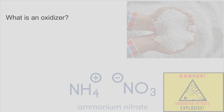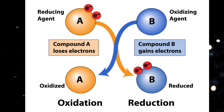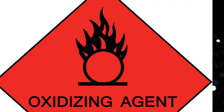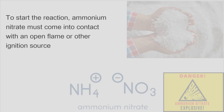What is an oxidizer? The compound is considered an oxidizer, meaning at an atomic level, it removes electrons from other substances in a chemical reaction. In a more practical sense, it increases the burning of fuels by increasing the oxygen that's available to those fuels. To start the reaction, ammonium nitrate must come into contact with an open flame or other ignition source.